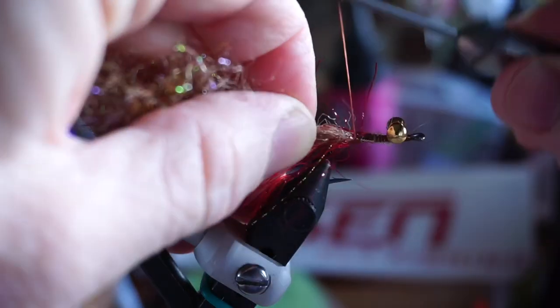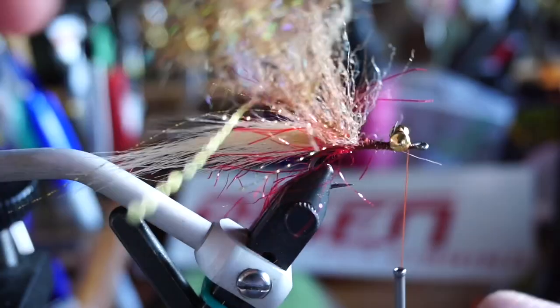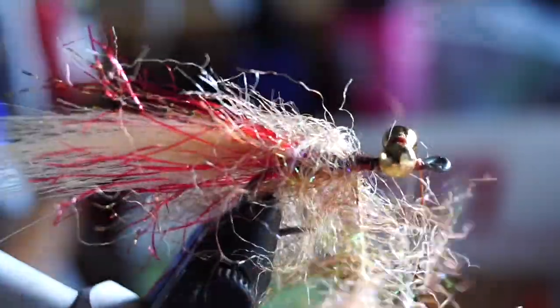Now we're going to be using the brush that we made in the beginning of the video. Tie this in directly behind the chenille and bring your thread up to between the dumbbell eyes and the eye of the hook. Then with touching wraps and ensuring you pull the fibers rearward with every wrap, wrap the brush up until the dumbbell eyes.